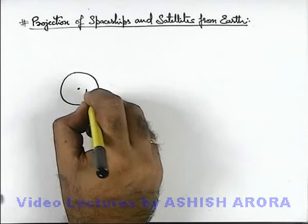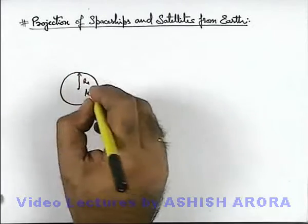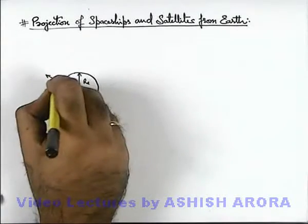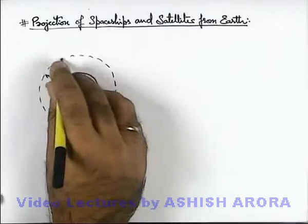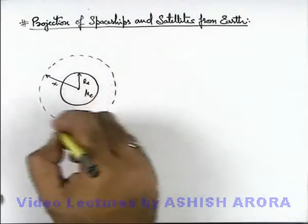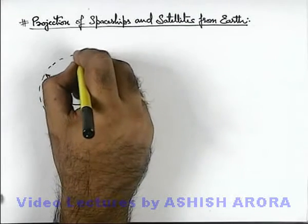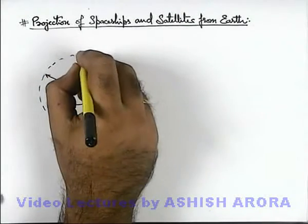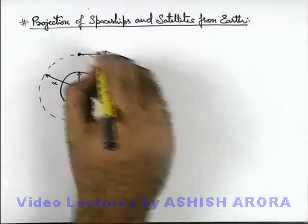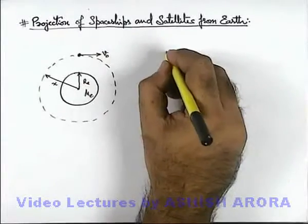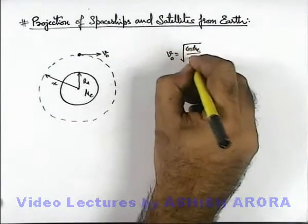Say this Earth has mass Mₑ and radius Rₑ. If from the Earth's centre at a distance x there is a circular orbit, and we wish a body to orbit the Earth in this circular path, then we throw it with the orbital speed v₀. The orbital speed is given as v₀ = √(GMₑ/x).